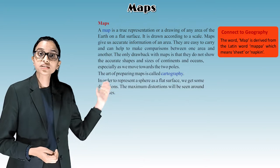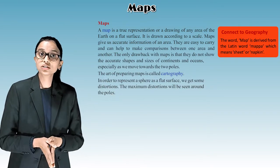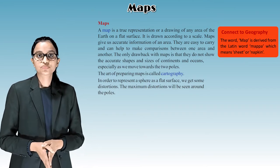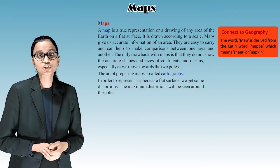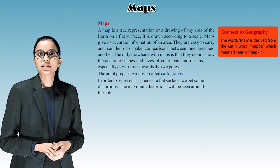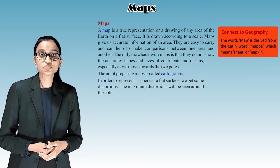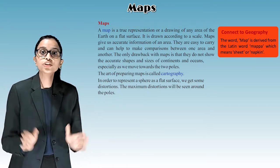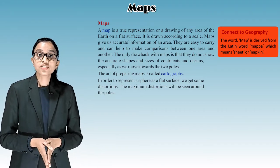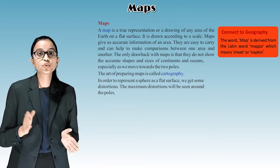A map is a true representation or a drawing of any area or the earth on a flat surface. It is drawn according to a scale. Maps give accurate information of an area. They are easy to carry and can help to make comparisons between one area and the other.